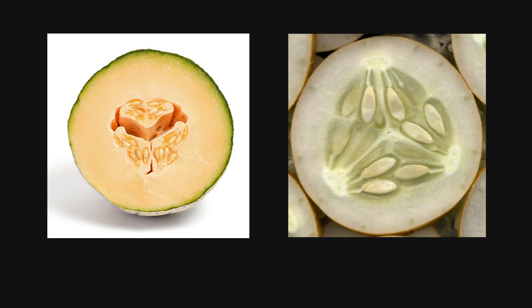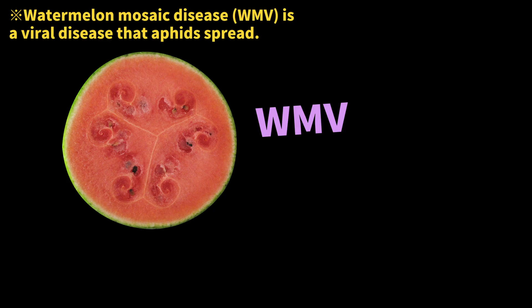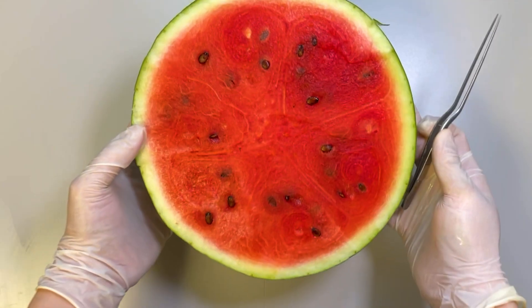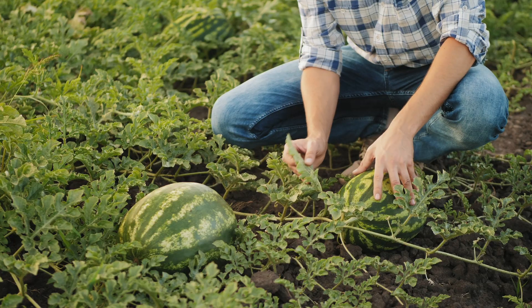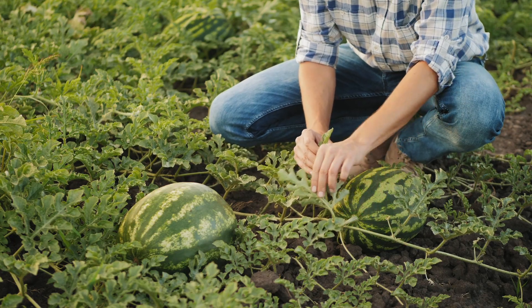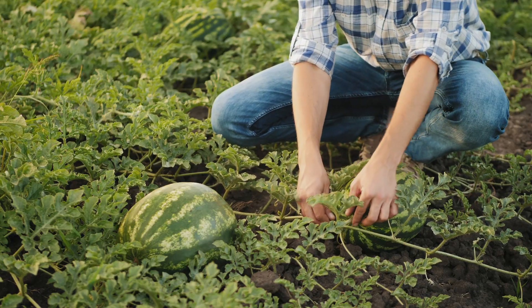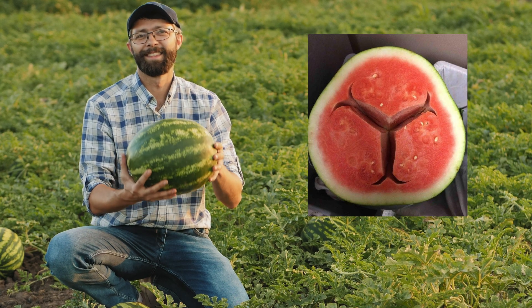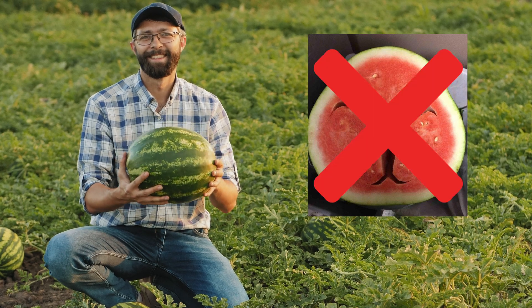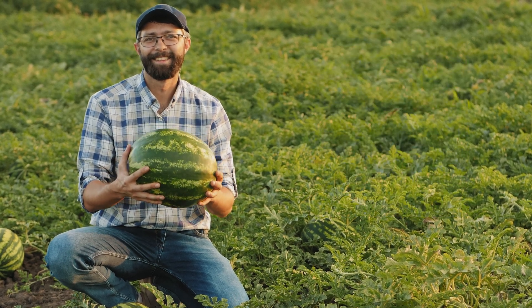Interestingly, this distinctive embryo shape isn't exclusive to watermelons — most cucurbits exhibit a comparable embryonic structure, making this pattern discernible in melons and cucumbers alike. There was a time when misinformation suggested these placental patterns indicated the presence of watermelon mosaic disease. However, such patterns can manifest in perfectly healthy watermelons. In certain scenarios, if the male flowers lack sufficient pollen or moisture, it can result in a void in the vomeronisal region, giving rise to this characteristic shape — though this remains relatively rare in commercially cultivated watermelons.